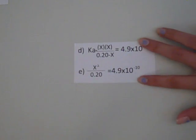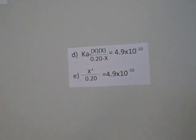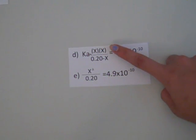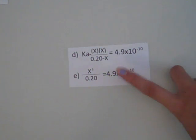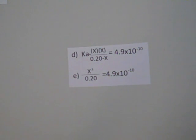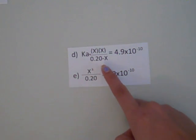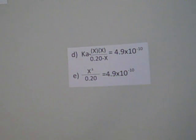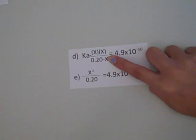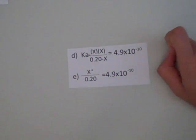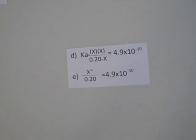To find X, we use the equilibrium constant equation. Ka equals the concentration of hydrogen and cyanide at equilibrium, X, over the concentration of HCN at equilibrium, 0.20 minus X, and that all equals 4.9 times 10 to the negative 10th. We can assume X is small compared to 0.20, so the change would be minimal.